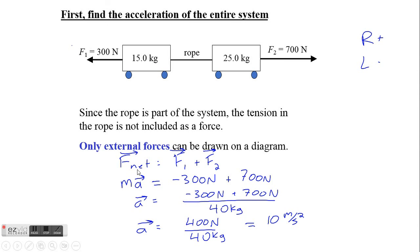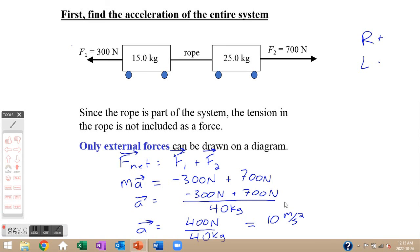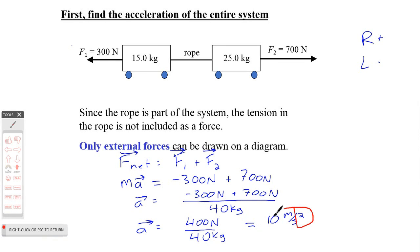The mass times the acceleration of the system is going to be negative 300 plus 700. Acceleration is going to be negative 300 plus 700 divided by 40 — at this point we realize it's probably a made-up question because the math works out super nicely. Right is positive, left is negative, so that's where the negative 300 comes from. We're using that to help determine direction. So our entire system is accelerating at 10 meters per second squared to the right.